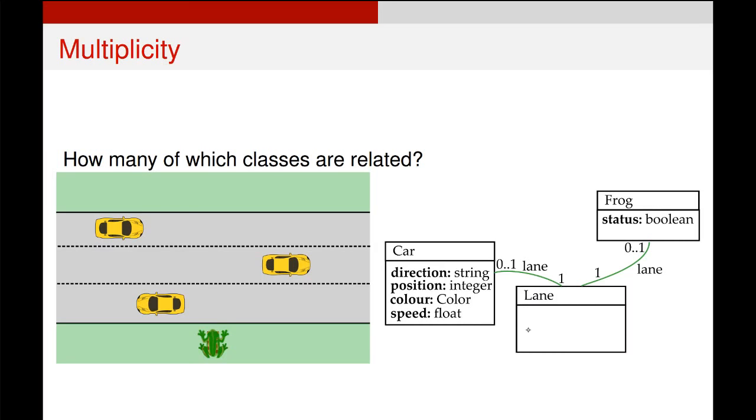On the other hand, each lane might not have a car or it might have one car as we see in this example here. And we're specifically saying that it is okay for there not to be a car in a lane and it's okay for there to be one car in a lane, but we can never have more than one car in a lane at a time.